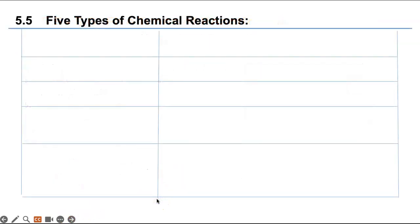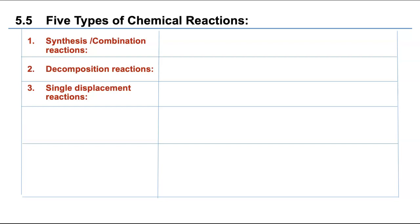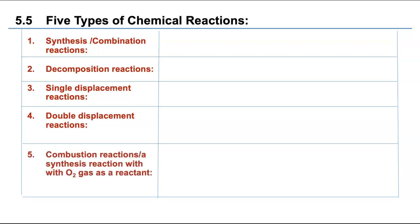Let's look at the five types of chemical reactions. First, there is synthesis or combination reactions. Then there are decomposition reactions, which are the opposite of synthesis or combination. Then there are single displacement reactions where one thing is displaced by another — this is where the metal reactivity series comes into play. We also have double displacement reactions where you have two ionic compounds and the cation displaces the anion of the other one and vice versa. Finally, we have combustion reactions, which is a type of synthesis reaction where oxygen gas is a reactant.